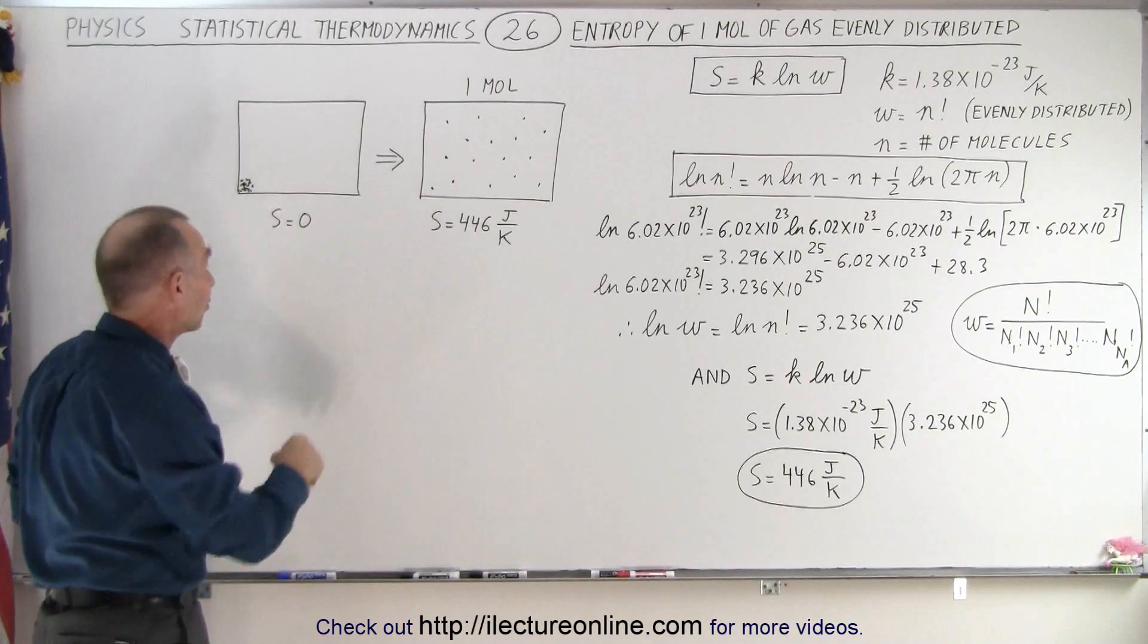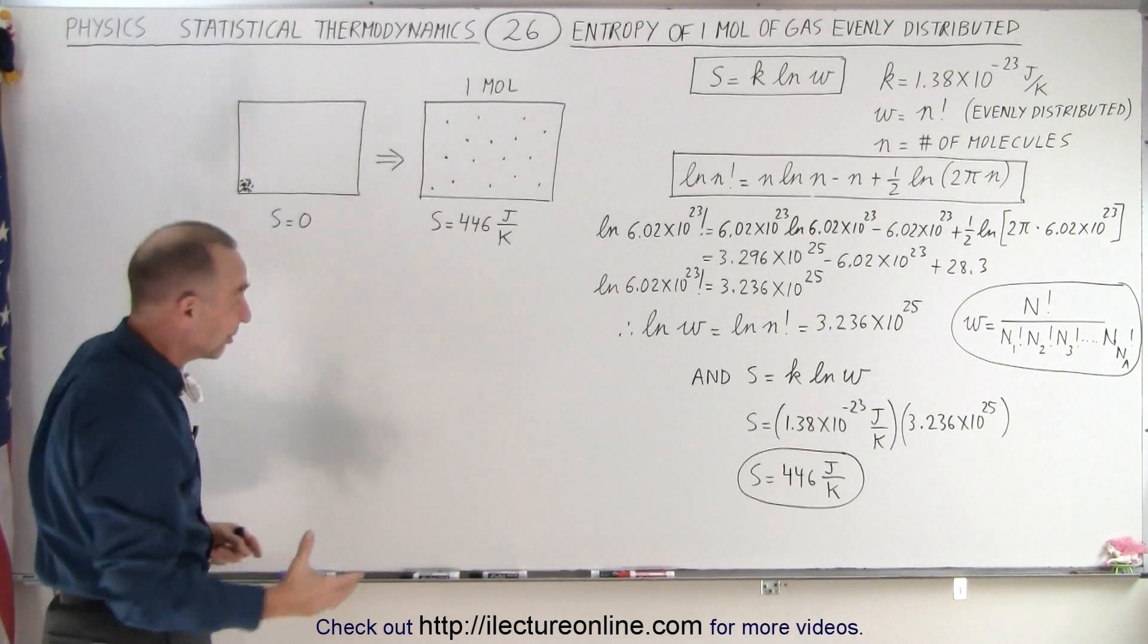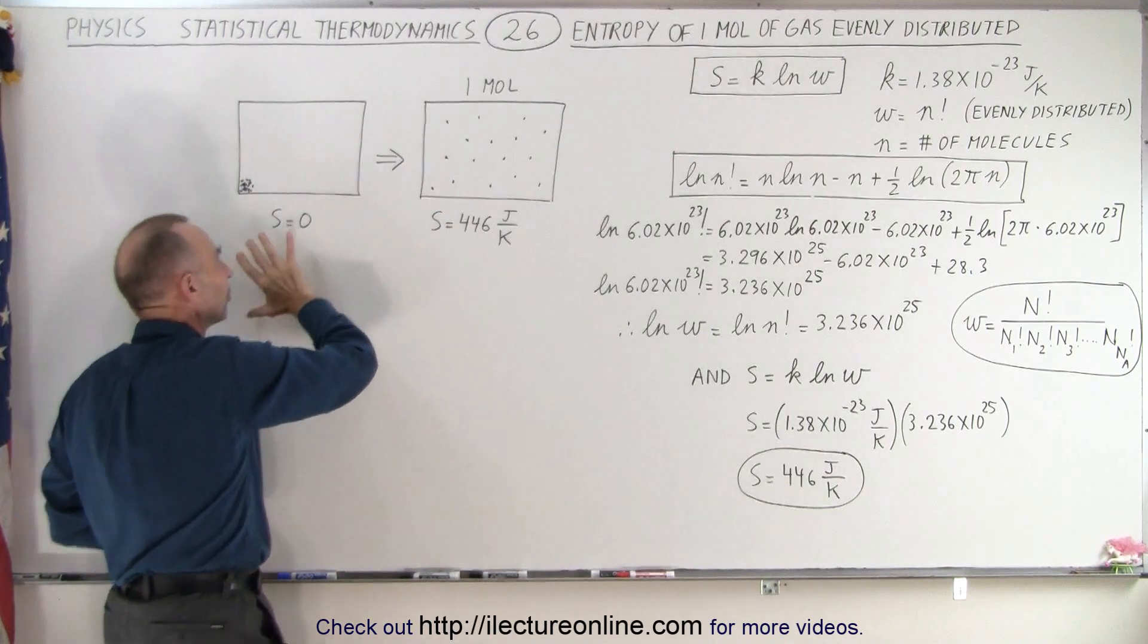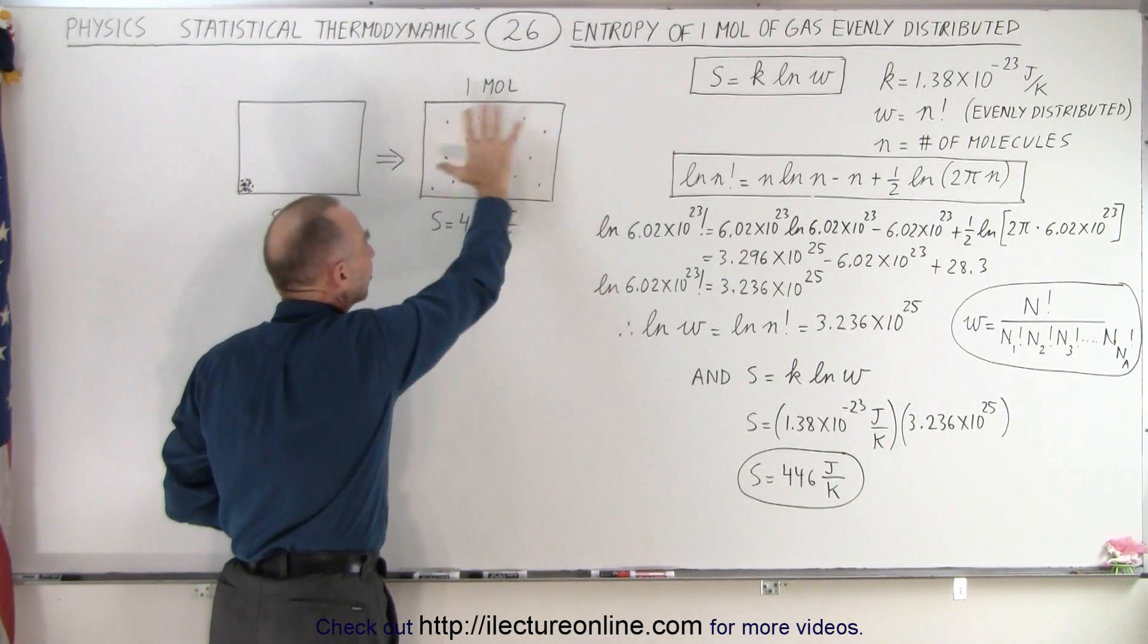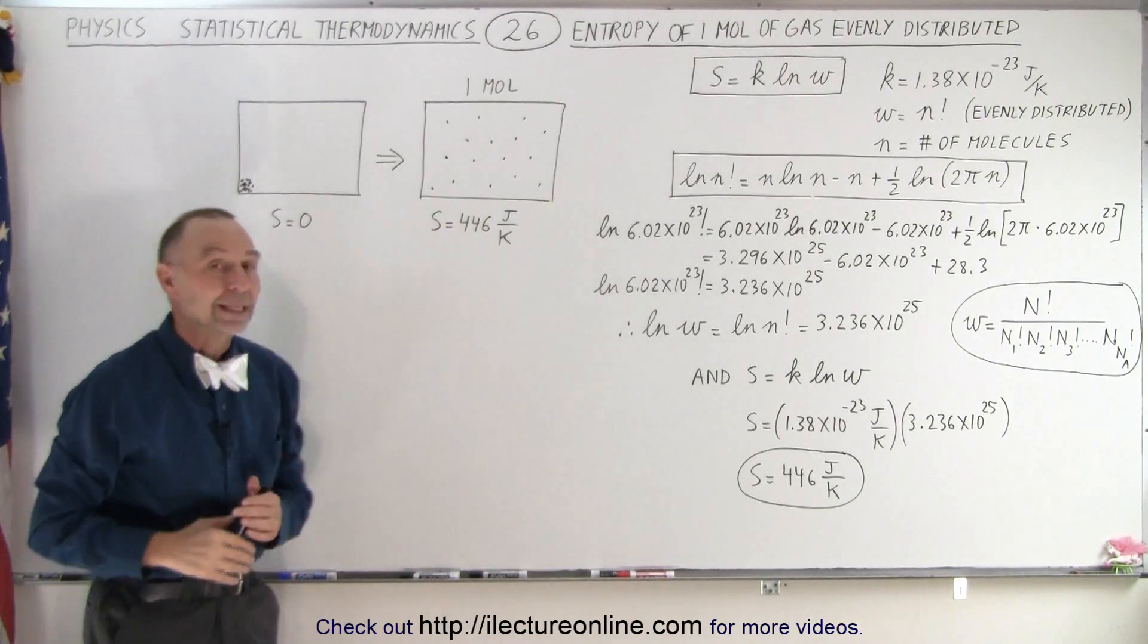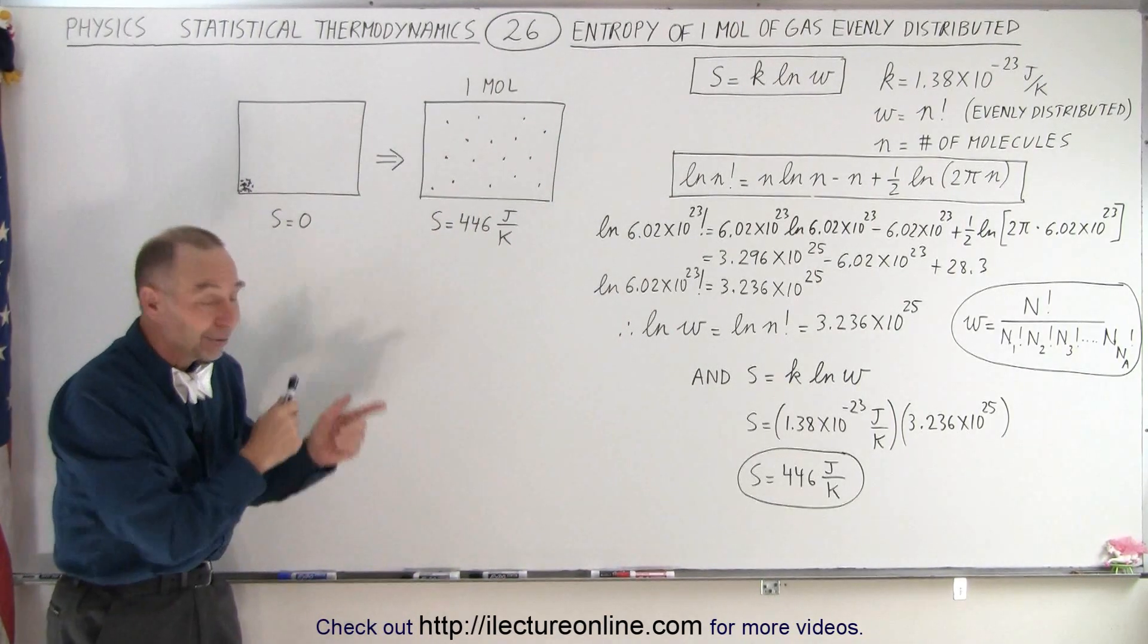not even in a billion years or 10 billion years, entropy would be zero, and then of course the entropy increases to the most probable state where they're all evenly distributed throughout the container, and that would then be entropy. And that is how that is calculated.